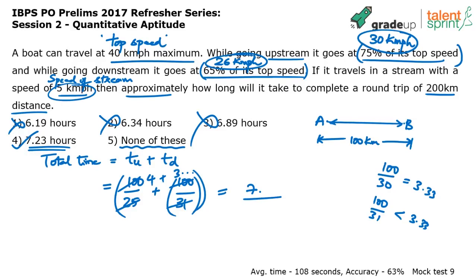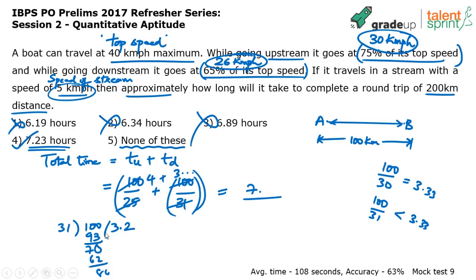If you want the exact answer, divide 100 by 31: 3 times 93, 7 remaining, take a decimal, place 0 — 2 times 62, 8 remaining — continue and you get approximately 3.22. So 4 plus 3.22 equals 7.22 or 7.23. But in my view it's not required — some risk can be taken when you come across that situation.